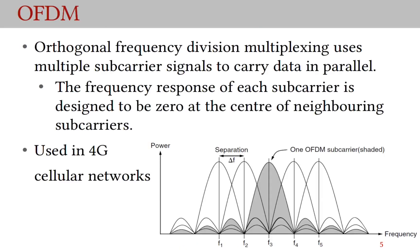OFDM stands for orthogonal frequency division multiplexing. OFDM uses multiple subcarrier signals to carry data in parallel. OFDM does away with the guard bands we saw before. The way it does this is that the system is designed such that the frequency response of each subcarrier is zero at the center of neighboring subcarriers. So the response of a given subcarrier at the next and previous subcarrier frequencies is zero, and the same is true for all other neighboring subcarriers — as you can see in this figure.